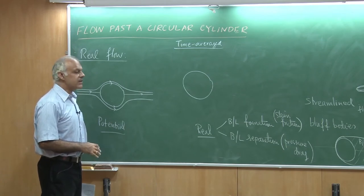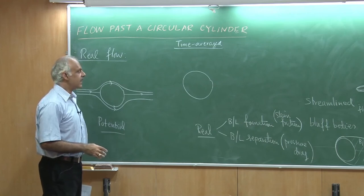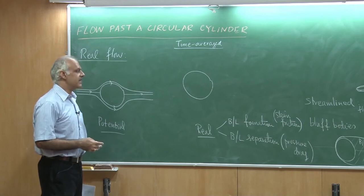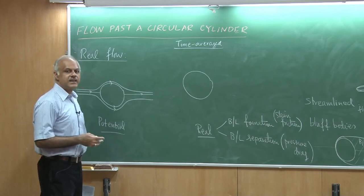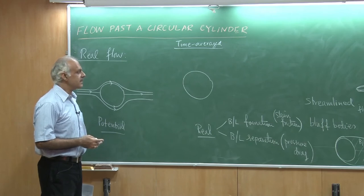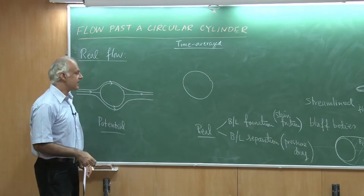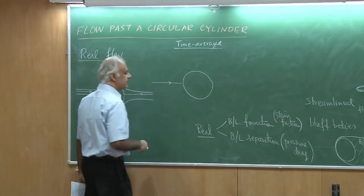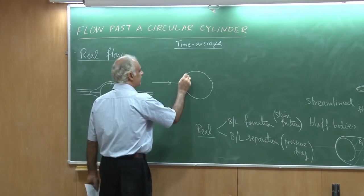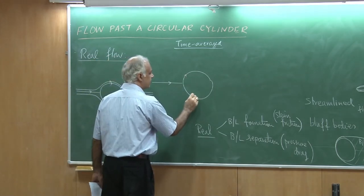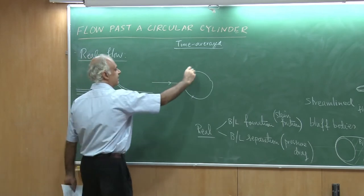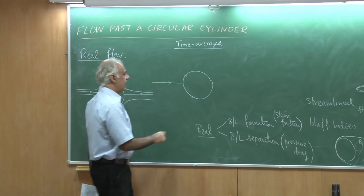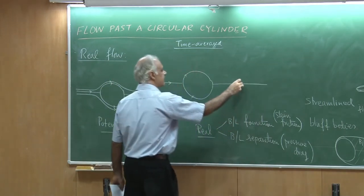If I take a long time exposure, I get the time-average streamline. This is still the stagnation streamline and I would get flow going on the surface of the cylinder. The surface of the cylinder still would have to be a streamline, and because of symmetry, I would still have the symmetric streamline.